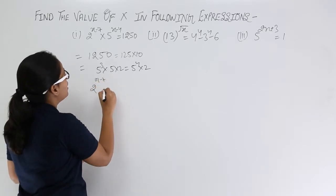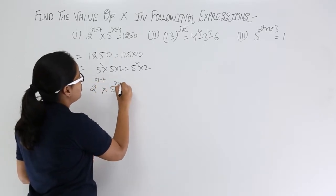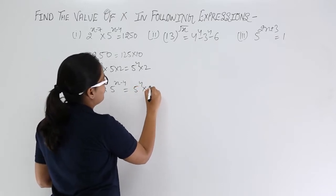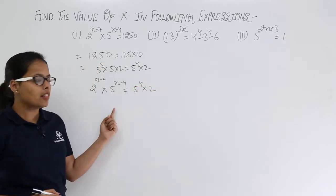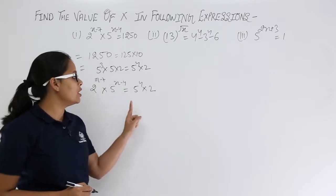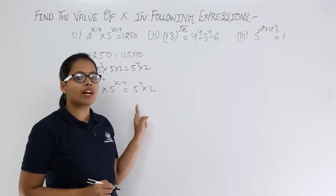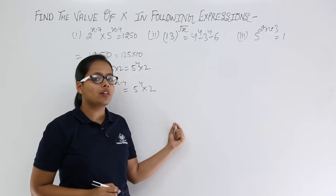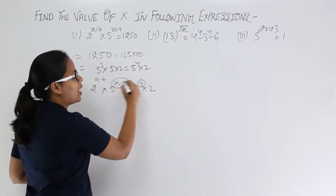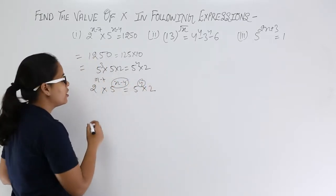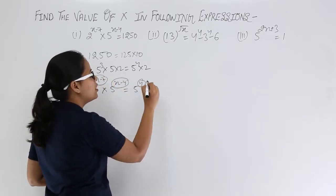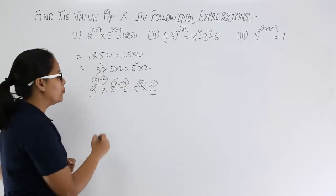Let's compare these two expressions. You can see the term 5 raised to power (x − 4) on the left hand side and 5 raised to power 4 on the right hand side. You will compare these two powers, and in case of 2 also you will compare the two powers.